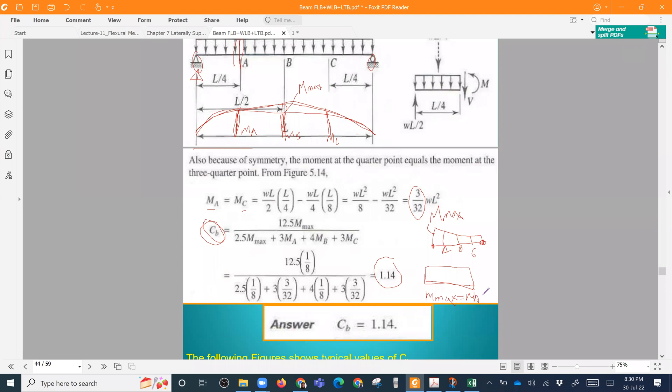Now, let's take it to Cb. What happens? 12.5 m, 2.5, 3, 4, 3. So for uniform moment, the Cb is 1. And non-uniform moment is the Cb value. We also have a certain number.